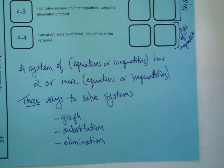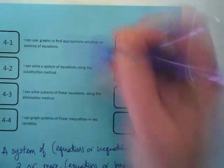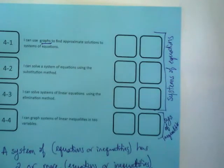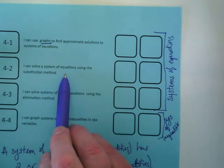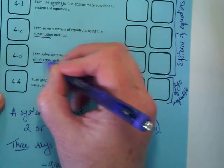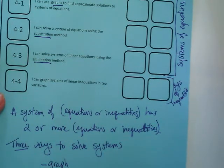And again, I know we haven't spent a ton of time on our tabs in the past. But if you look up here, what's the objective 4-1? I can use graphs. I can solve a system of equations for 4-2 using substitution. What word do you see in 4-3? Elimination. I don't expect you to know what those mean yet. We'll go through that as this week progresses.